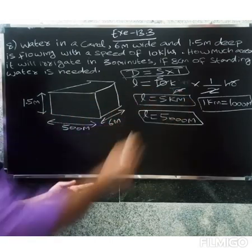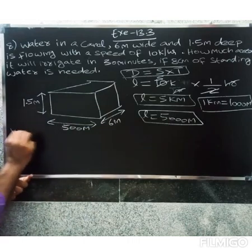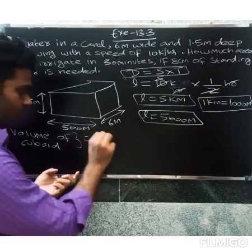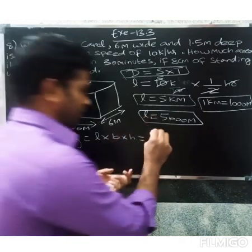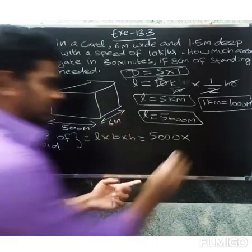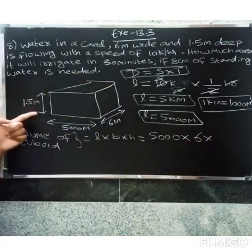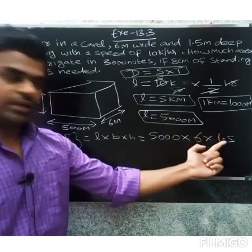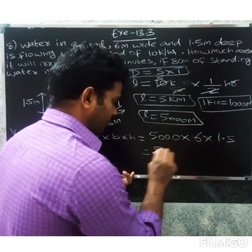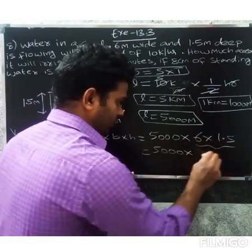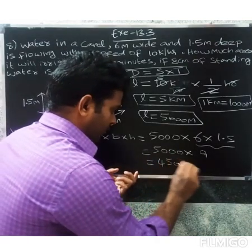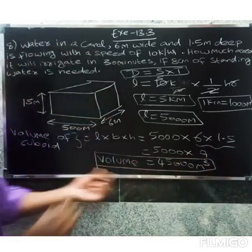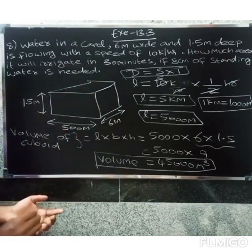Now we calculate the volume of water. Volume equals L into B into H, so 5000 into 6 into 1.5. That gives us 5000 into 6 equals 30,000, and 30,000 into 1.5 equals 45,000 cubic meters.